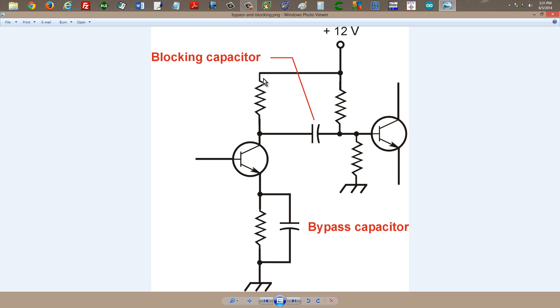So that allows us to have a positive bias on the collector here, and also allows these two resistors to regulate the bias on the base of this transistor here.